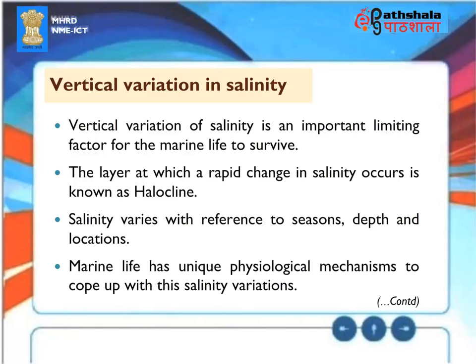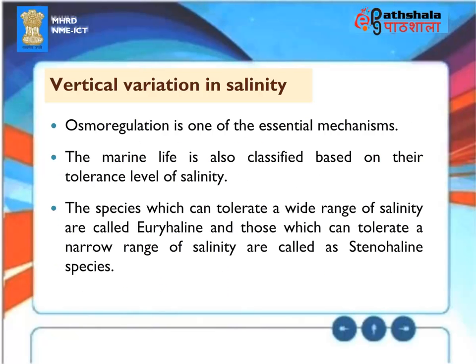Vertical Variation in Salinity: Vertical variation of salinity is an important limiting factor for marine life to survive. The layer at which a rapid change in salinity occurs is known as the halocline. Salinity varies with reference to seasons, depth, and locations. Marine life has unique physiological mechanisms to cope with salinity variations — osmoregulation is one of the essential mechanisms. Marine life is classified based on their tolerance level of salinity: species which can tolerate a wide range of salinity are called euryhaline, and those which can tolerate a narrow range are called stenohaline species.